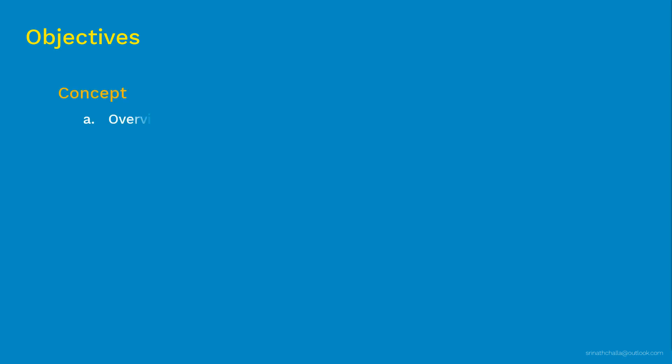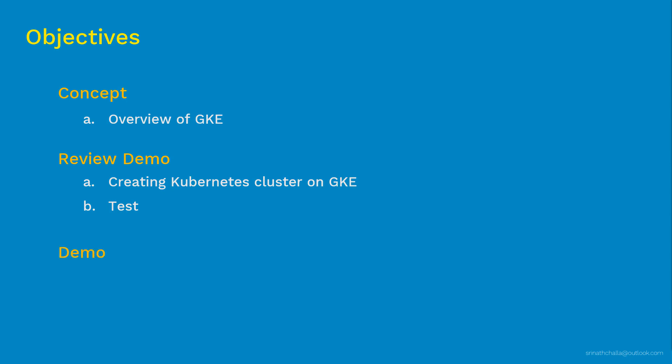In the first section, we'll discuss concepts around GKE — what it is, what it does, and its advantages. After that, in part 2, we'll review a demo we performed live in advance. This will help you better understand when watching it on a live system. In the review demo, I'll show you how easy it is to create a Kubernetes cluster with a couple of worker nodes, and then we'll test the entire Kubernetes setup by deploying a sample application. And finally, in part 3, we'll have the actual demo creating the Kubernetes cluster on GKE.